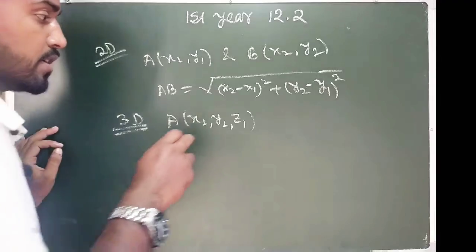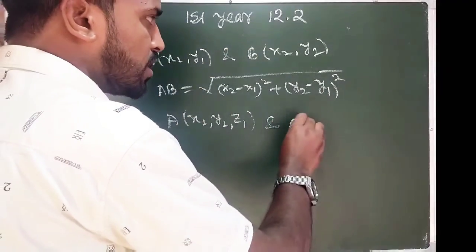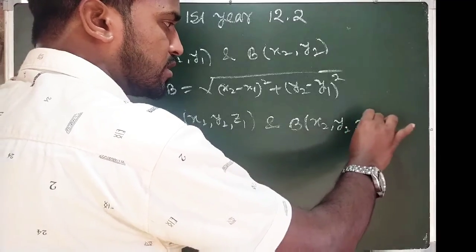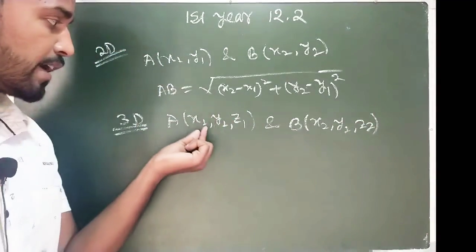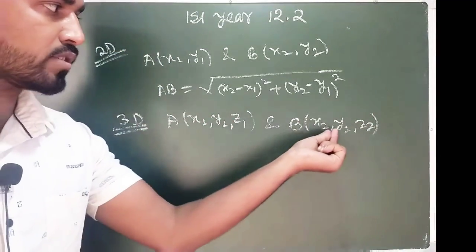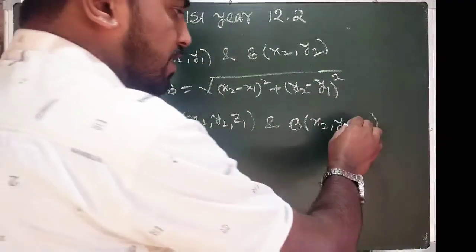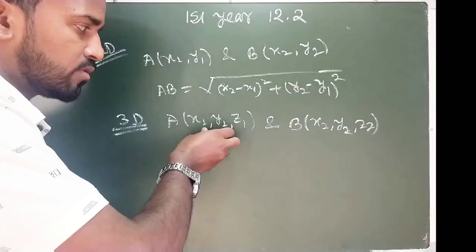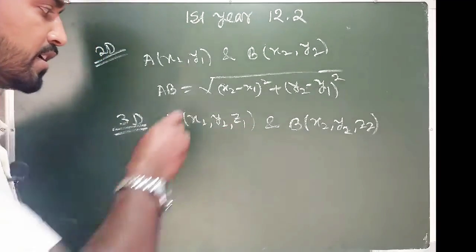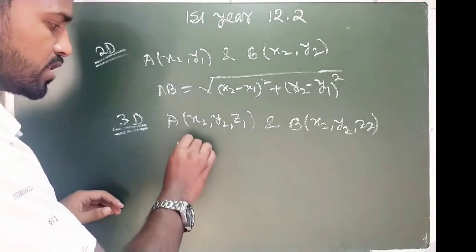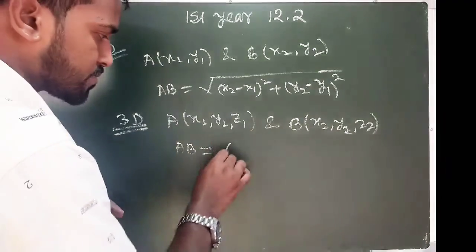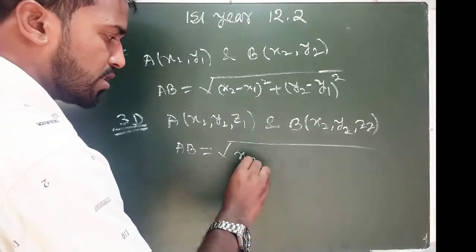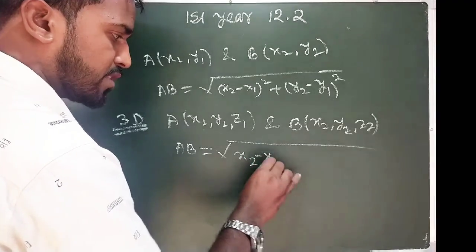3D. We have points A to B in 3D. The coordinates are X2, Y2, Z2 and X1, Y1, Z1, X2, Y2, Z2.